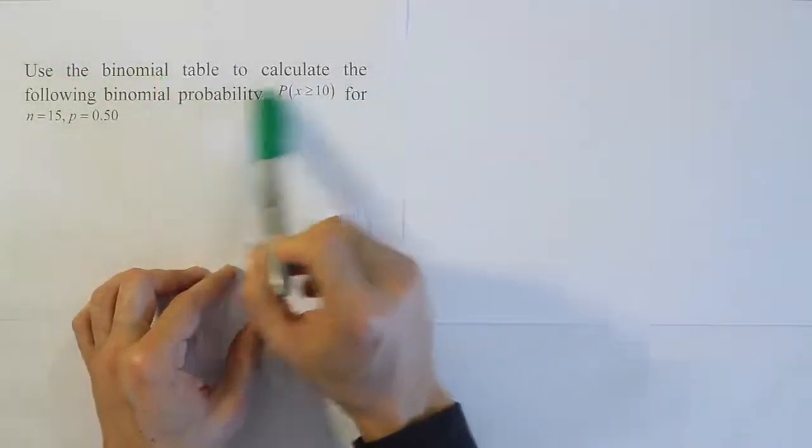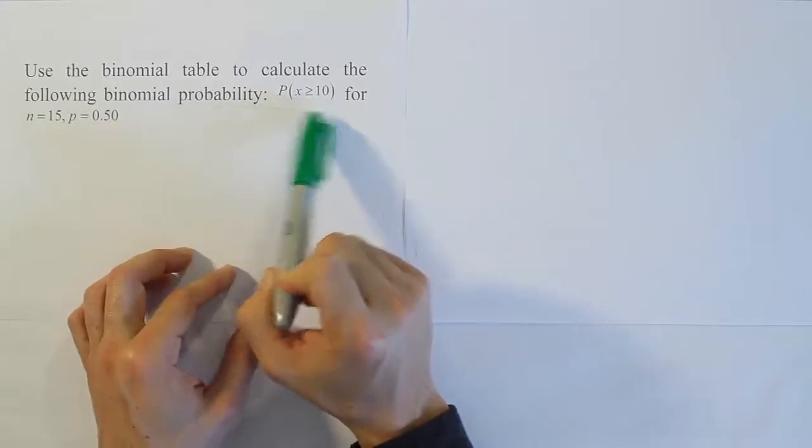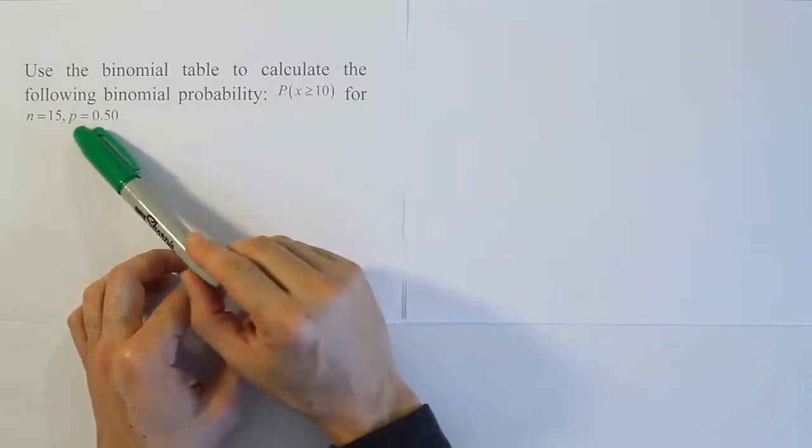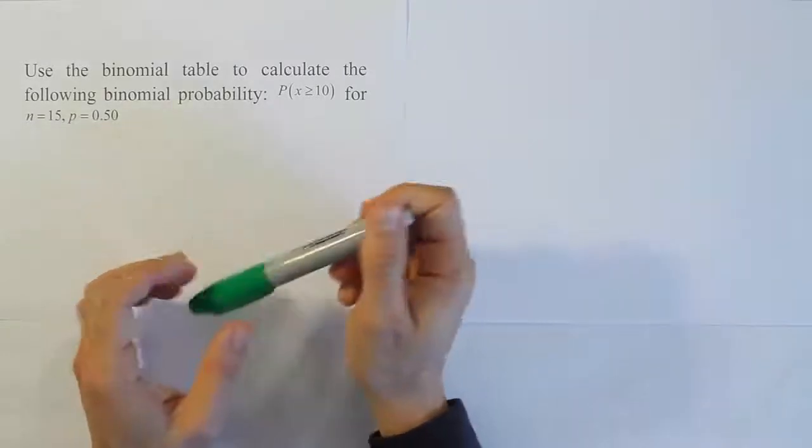Use the binomial table to calculate the following binomial probability. The probability that x is greater than or equal to 10 for n equals 15 and p equals 0.5. Remember p is the probability of success, right?